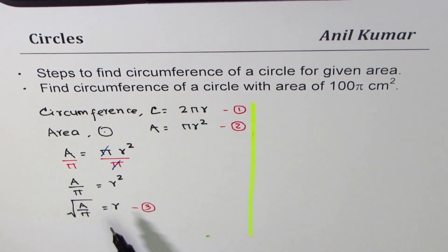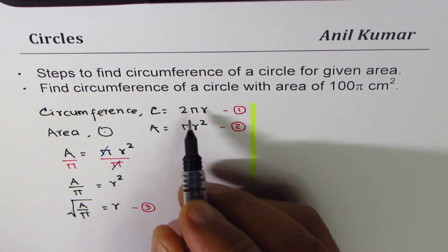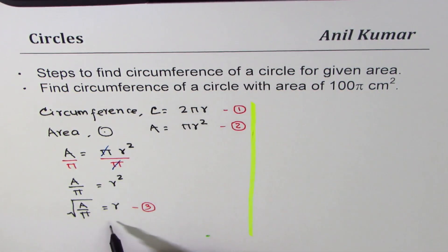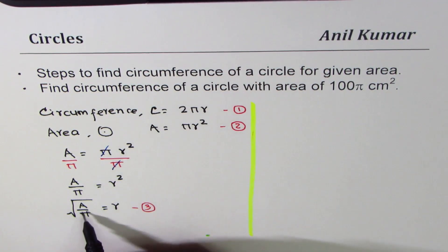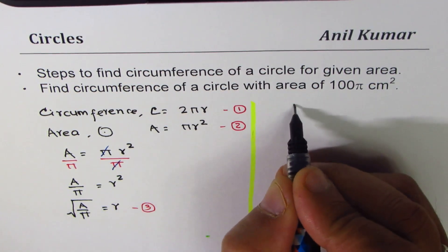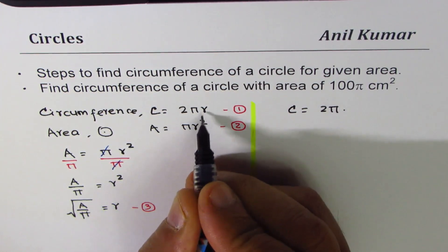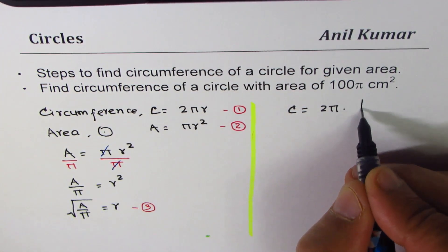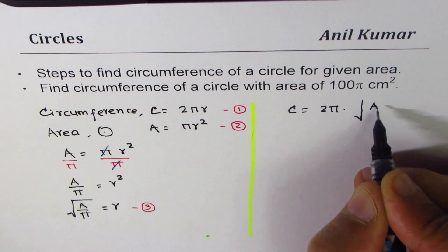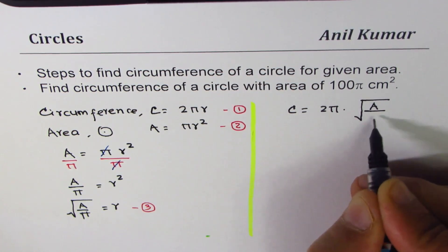And if I substitute r as square root of A over π, sorry, if I substitute r as square root of A over π in circumference, we should relate circumference with area, right? So what is c equal to now? 2π times r and r is square root of area divided by π.